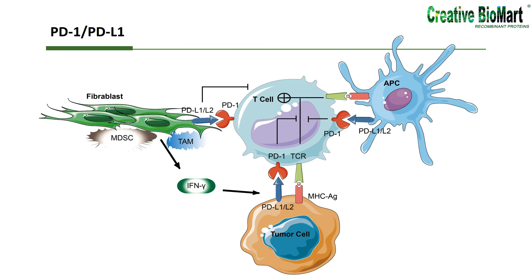Cells from many different human tumors can evade host immune surveillance by expressing PD-L1 on their surface. Expression of this immune checkpoint ligand by tumor cells is thought to be induced by an anti-tumor immune response. Tumor-infiltrating lymphocytes recognize tumor antigens presented by tumor cells, tumor stromal cells, and APCs, and subsequently release IFN-gamma to induce PD-L1 expression in these cells, resulting in an adaptive immune resistance microenvironment. In contrast to the positive co-stimulatory signal delivered by CD28 receptors, PD-1 delivers a negative signal when bound to its ligands, PD-L1 and PD-L2. PD-1 suppresses T-cell activation through the recruitment of phosphatase SHP2 and the subsequent inactivation of ZAP70, which plays a critical role in T-cell receptor signaling.